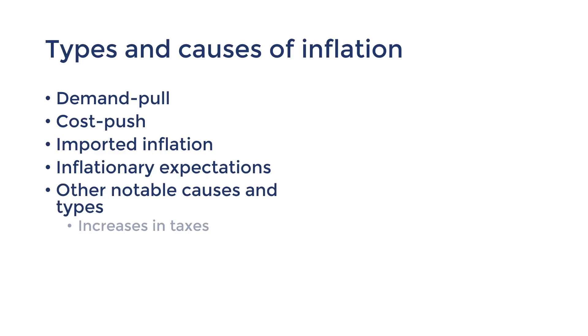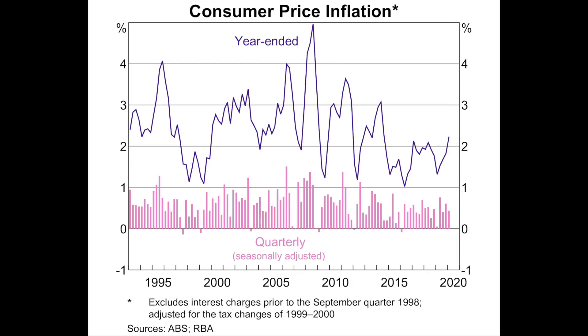Those are a few more types of inflation and their causes as prescribed by the syllabus. Here are a few more types and causes that you might come across. An increase in taxes could lead to inflation because it increases the cost of production and the aggregate supply curve shifts to the left. For example, the GST was introduced in Australia in July 2000 — a 10% value-added tax on almost every good and service — and this increase in costs caused Cost-Push Inflation.